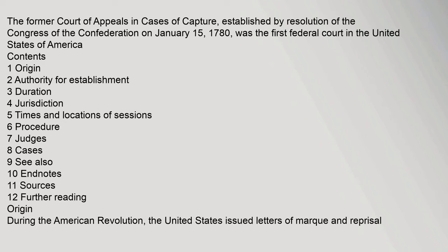The former Court of Appeals in Cases of Capture, established by resolution of the Congress of the Confederation on January 15, 1780, was the first federal court in the United States of America. Contents: 1. Origin, 2. Authority for establishment, 3. Duration, 4. Jurisdiction, 5. Times and locations of Sessions, 6. Procedure, 7. Judges, 8. Cases, 9. See Also, 10. Endnotes.